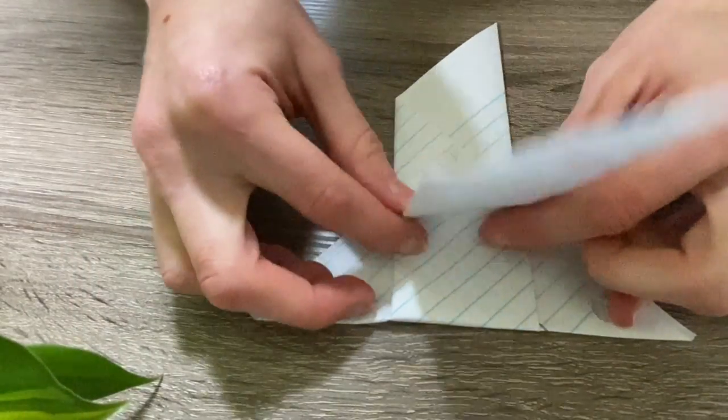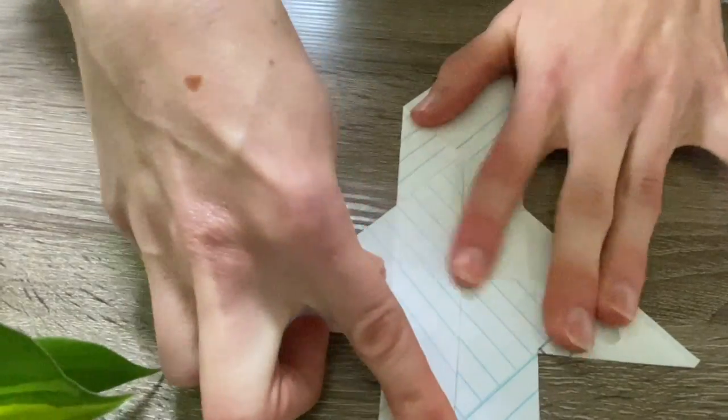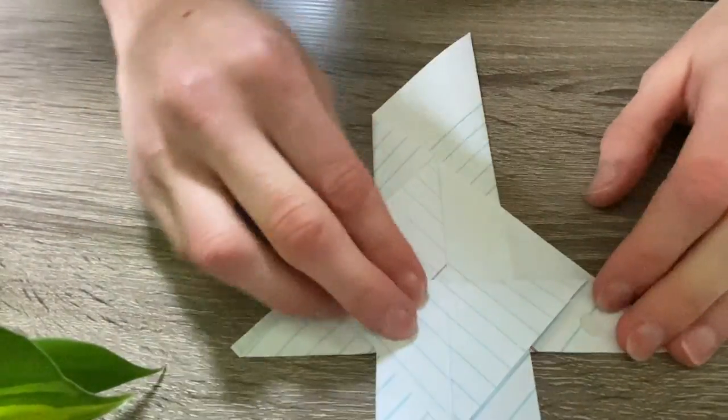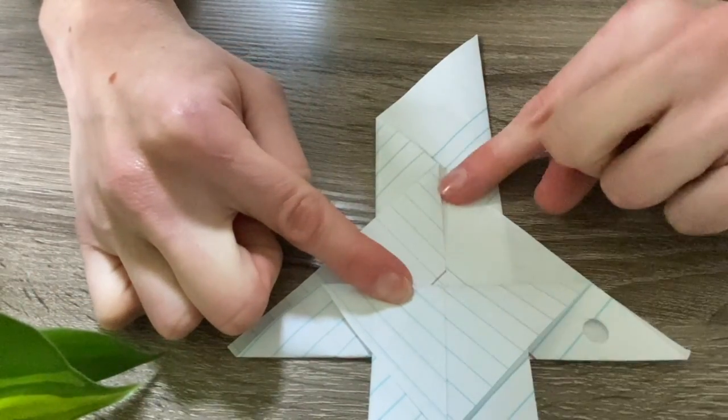it about halfway back again so that we get another diamond shape here in the center that's got a fold right down the middle.